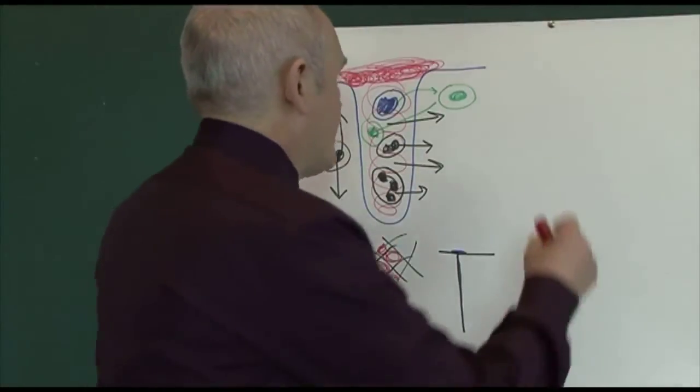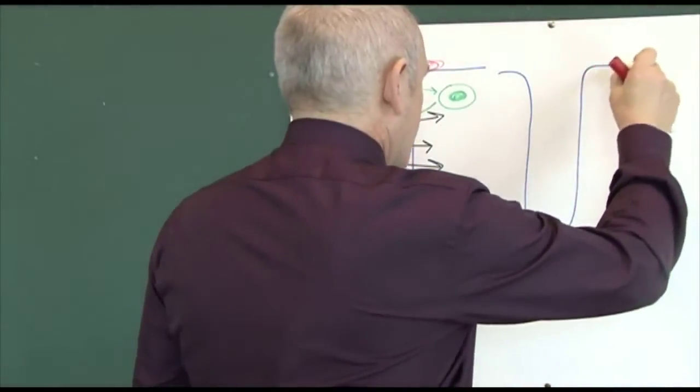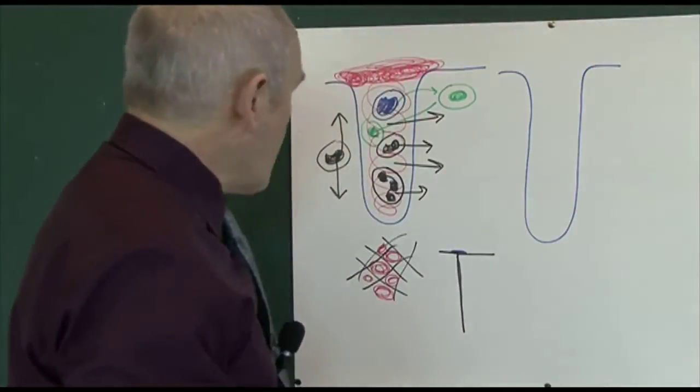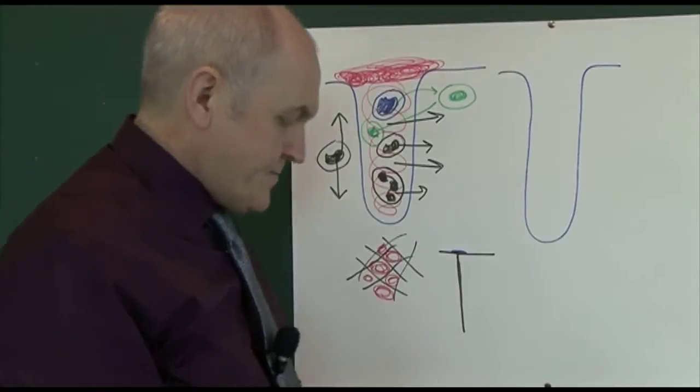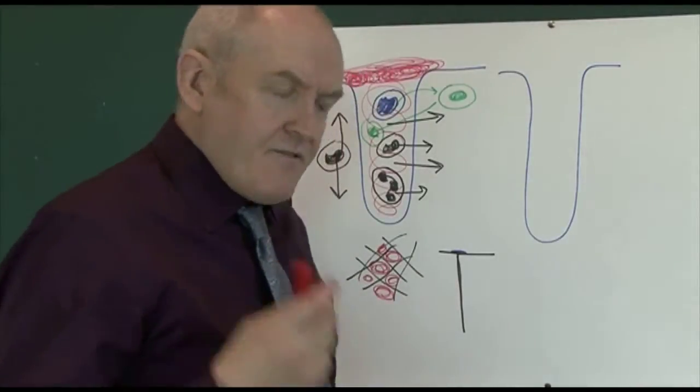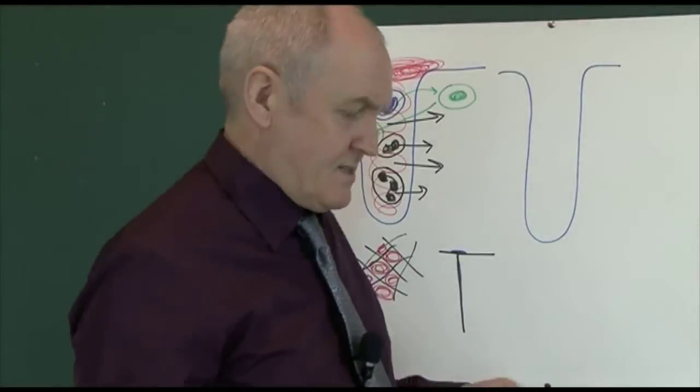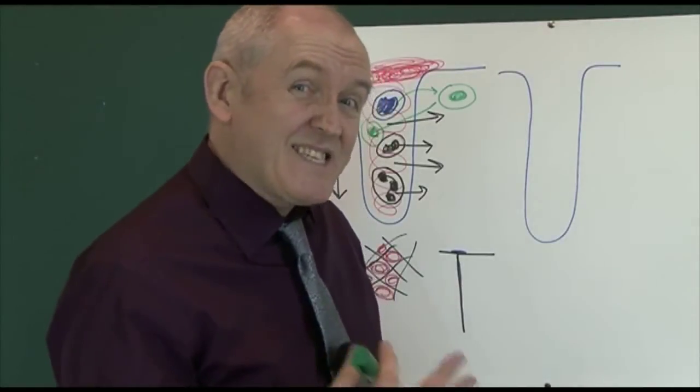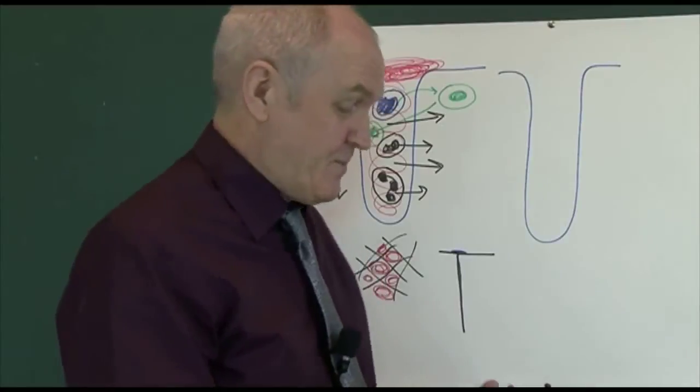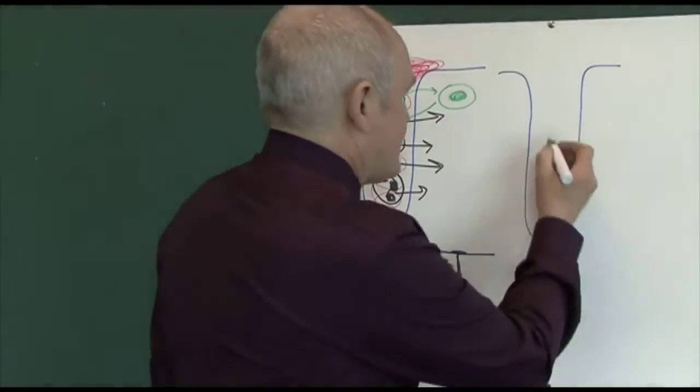So here we have the wound now a little later on. And what's happened now is that the fibroblasts—a blast cell is a cell which produces something, isn't it? So we have fibroblasts in here.